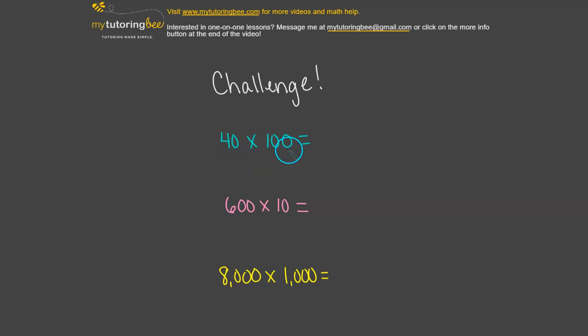So 40 times 100. Well, I see a 4 and I see 1. So I know that 4 times 1 is 4. And then let's see how many zeros we need to put onto the end of that. But I've got one zero from the 40, and then two zeros from the 100. So that's a total of three zeros. So then our answer should be 4,000. Did you get it right?